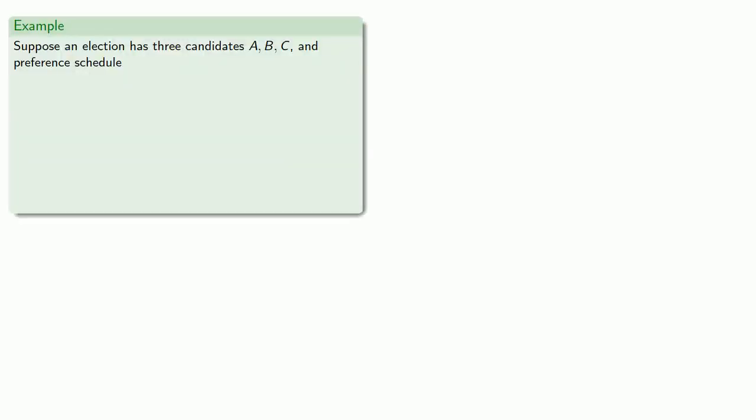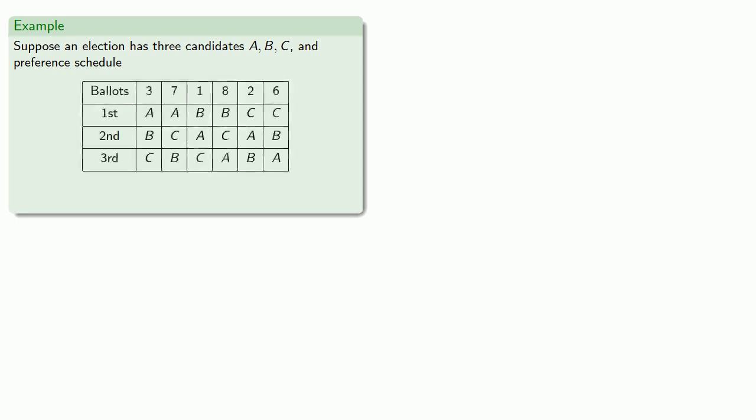Let's see how that works out. Suppose an election has three candidates, A, B, and C, and a preference schedule that looks like this. If the election is run using a Borda count, which candidate wins?